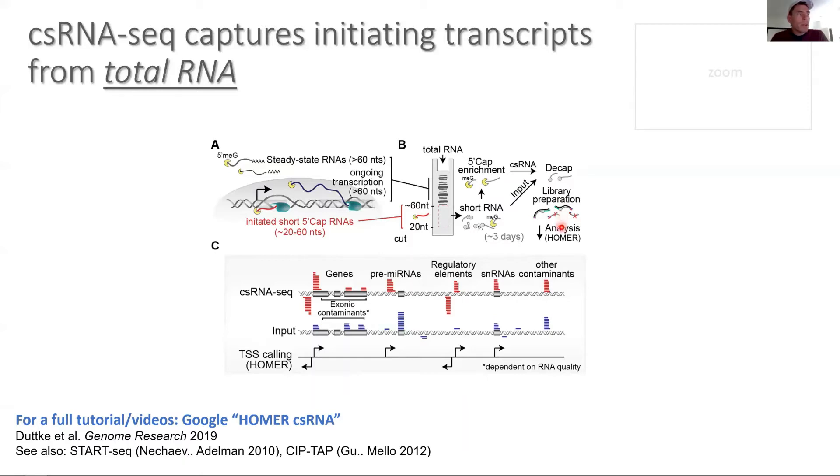You might be wondering, how do we know we actually called a transcription start site? It's pretty easy. CSRNAseq has an input and a CSRNAseq library. By the way, you can use these input libraries beautifully to study microRNAs and other small RNAs. But how do we distinguish these RNAs that are ongoingly transcribed from degradation products?